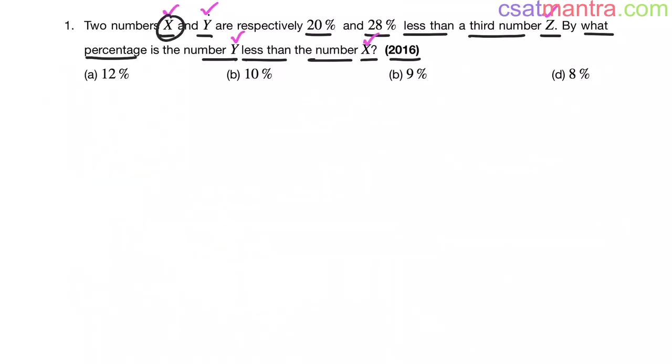Here, X and Y are respectively 20% and 28% less than the third number Z. So we are comparing X and Y with Z. So I am taking Z as 100. By taking Z as 100, our problem becomes easier.